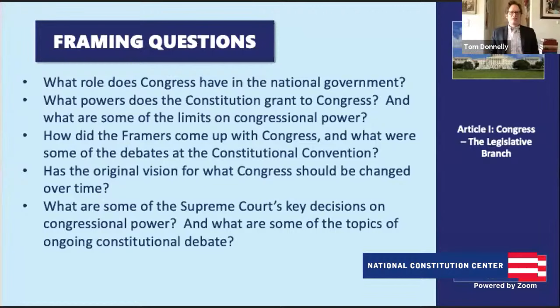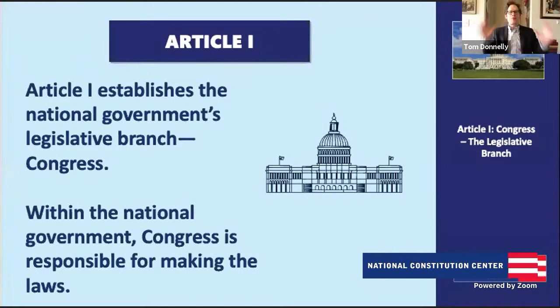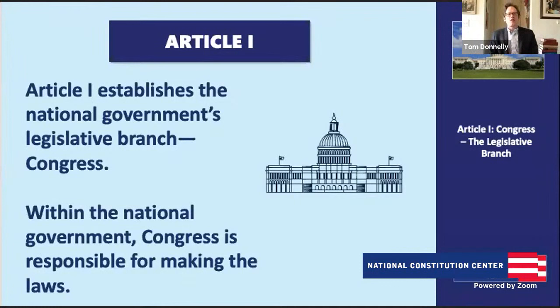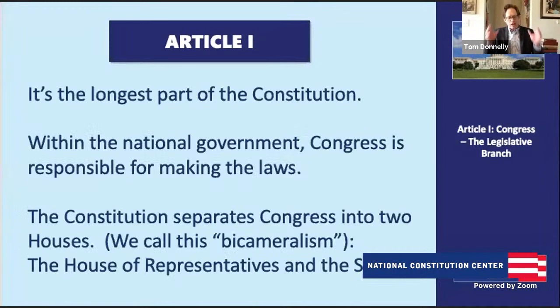Let's go to the Constitution — it's the biggest part of the Constitution, Article I. The founding generation laid out the branches of government in Articles 1 through 3. Article I gives us Congress, the legislative branch, and within the national government, Congress is responsible for making the laws. For the founding generation, they believed that Congress was both the most important and also possibly the most dangerous part of this new national government, and so they wanted to lay out a lot of the details about how it was going to work. So if we're looking at Article I of the Constitution, what do we see?